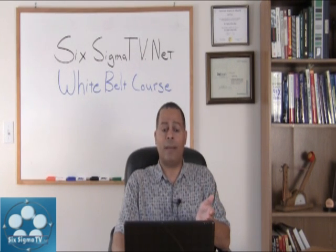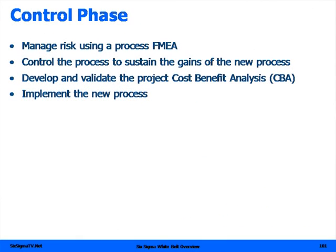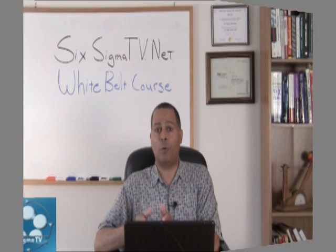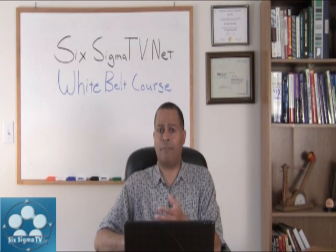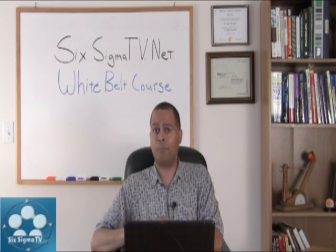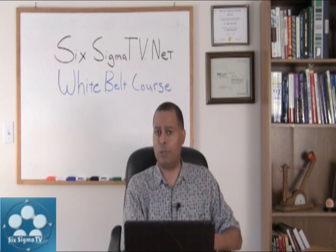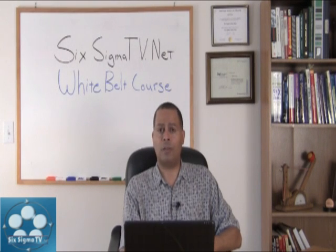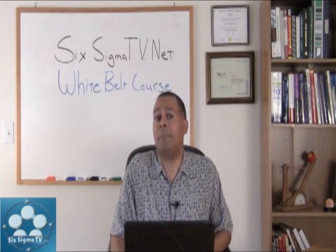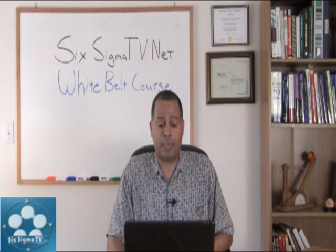The control phase helps you also manage risk, and we do that by using an FMEA — failure modes and effects analysis. It makes sure that once you have re-engineered that process, you look at all the risks. You make sure you don't change anything where you're going to have legal issues, product failures in some other area, service delivery problems or any of that kind of stuff. So we use a tool called an FMEA that helps you mitigate the risk of that new process.